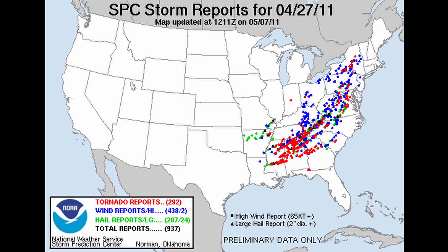April 27th, 2011 is the single deadliest day in U.S. tornado history. On this day alone, there were 216 confirmed tornadoes, including multiple long-track violent tornadoes rated EF-4 or EF-5 on the Enhanced Fujita scale. These tornadoes ravaged towns and cities across Mississippi, Alabama, Tennessee, and Georgia.